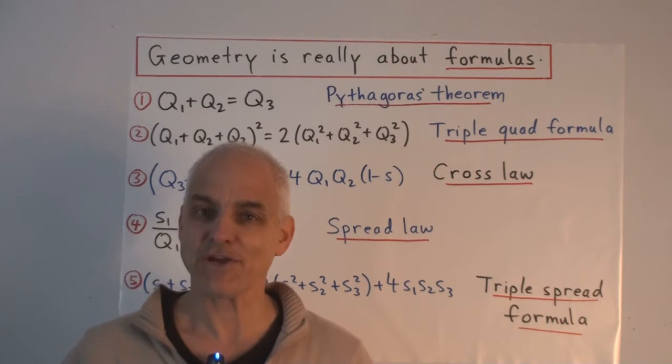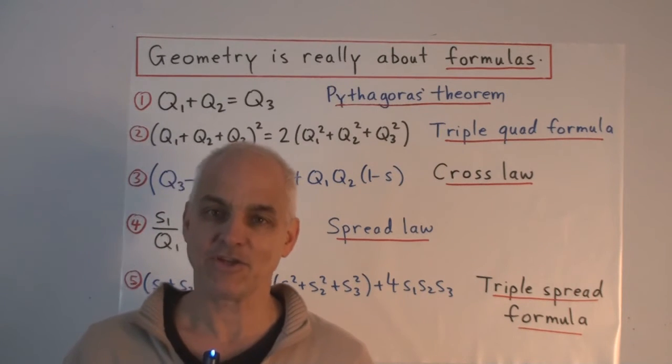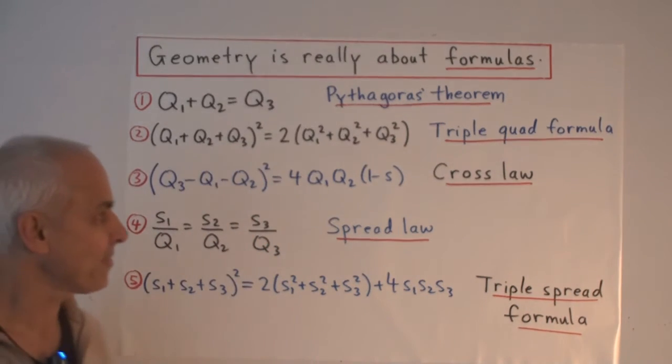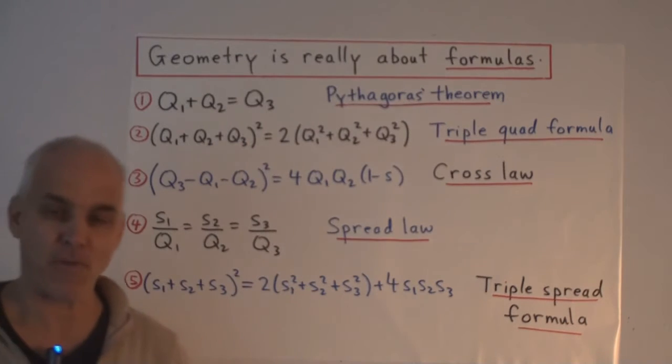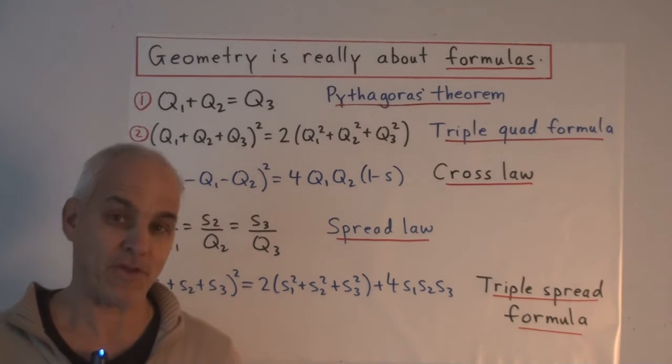In our presentation of rational trigonometry so far, I've mentioned the five main facts of the subject. And these are all formulas. Let me remind you what they are. These are the five most important formulas in geometry. And in my view, probably the five most important formulas in all of mathematics.